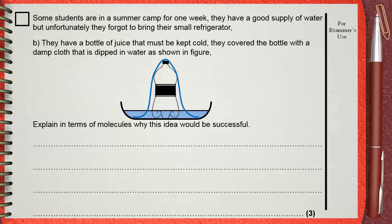They have a bottle of juice that must be kept cold. They covered the bottle with a damp cloth that is dipped in water as shown in figure. Explain in terms of molecules why this idea would be successful.